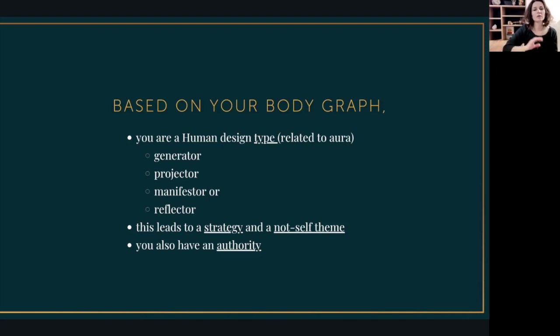So based on your type, there will be a strategy and a not-self theme. So the strategy is what you experience, is a way of, is basically how you work with other people and how you work with information and ideas coming your way. That is the strategy. And then there's a not-self theme. And the not-self theme is related to that element that I mentioned, where you can either know when you are in alignment or when you are out of alignment. And out of alignment is what we call in human design, the not-self theme. This is what you do when you are not yourself, basically.